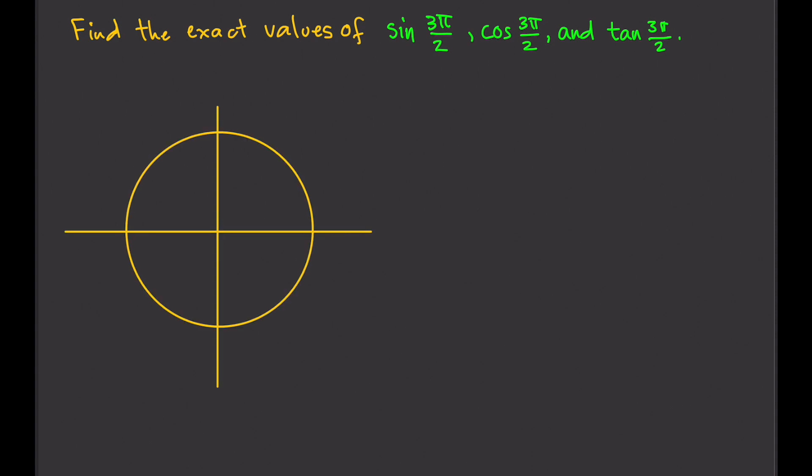Just like before, we're going to need to locate 3π/2 in the unit circle. But since this is in radians and we're not too familiar with angles in radians, we're going to need to convert this into degrees.